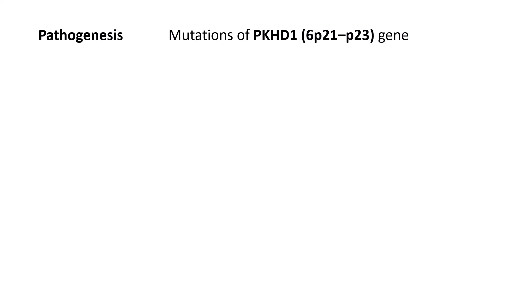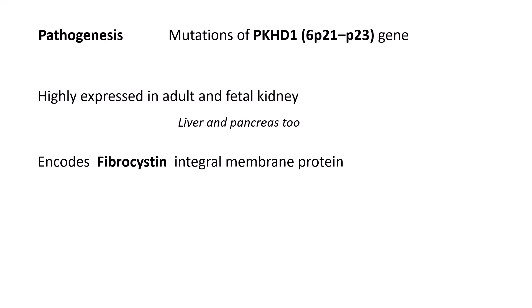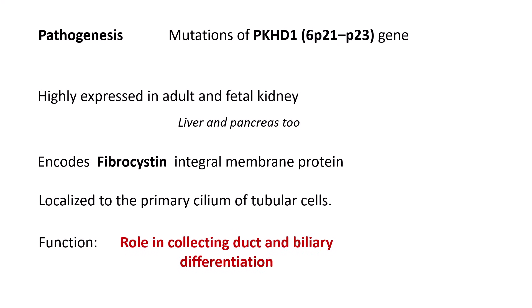Regarding pathogenesis: in autosomal dominant polycystic kidney disease, the genes involved are PKD1 and PKD2. In autosomal recessive polycystic kidney disease, it is a mutation of PKHD1, located on chromosome 6. This gene is highly expressed in adult and fetal kidneys, and also in the liver and pancreas. It encodes a protein called fibrocystin, which is an integral membrane protein localized to the primary cilium of tubular cells.